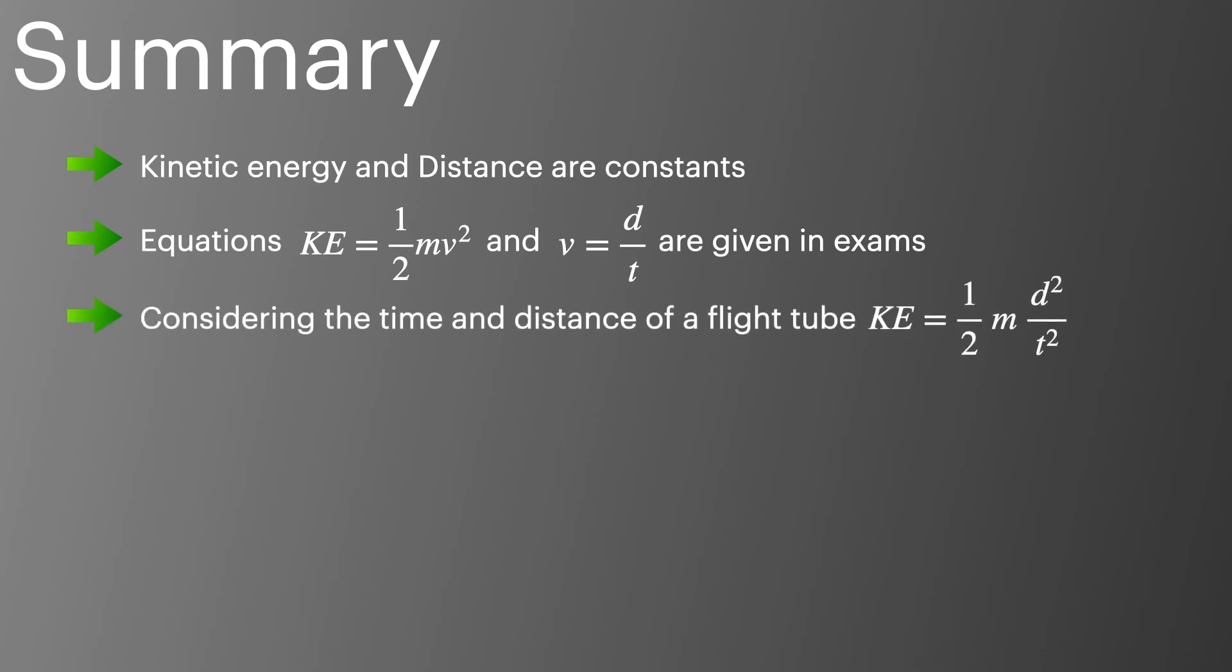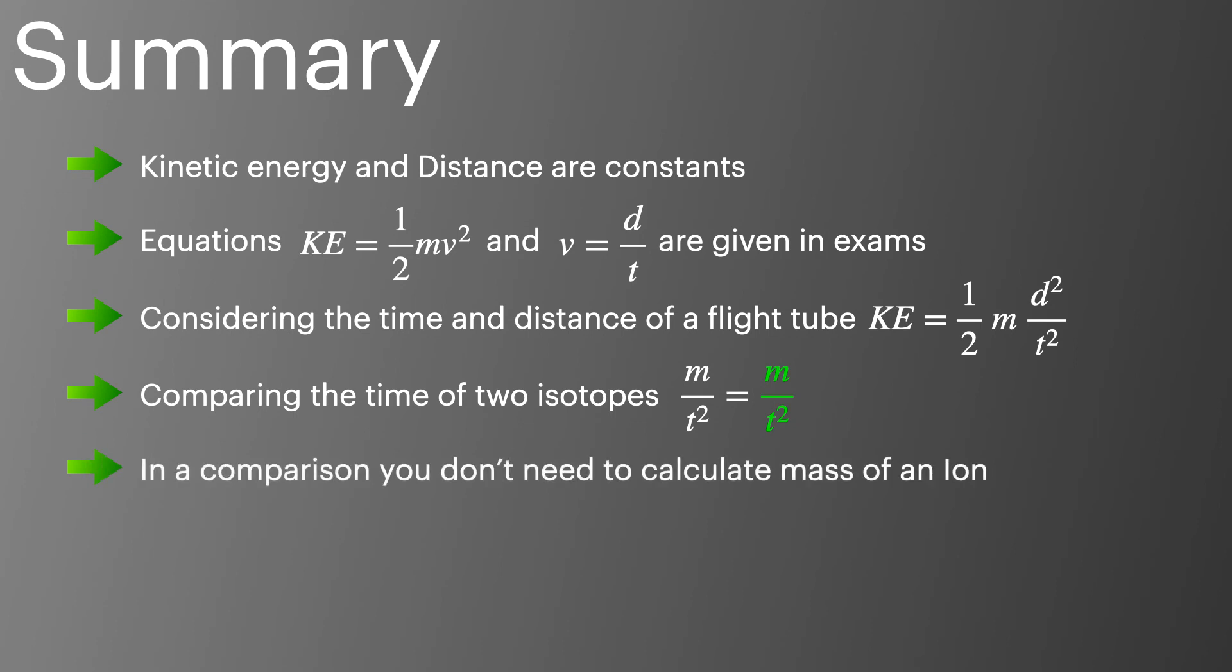Considering the time and distance of a flight tube we can use KE equals 1/2 m d squared over t squared which can make calculations simpler and faster. When we compare the time of two isotopes we can do m divided by t squared equals m divided by t squared to get a faster and simpler calculation. And finally in a comparison you don't need to calculate the mass of an ion because to do that you're doing the same process on both sides of the equation so we can just use the relative atomic masses instead.